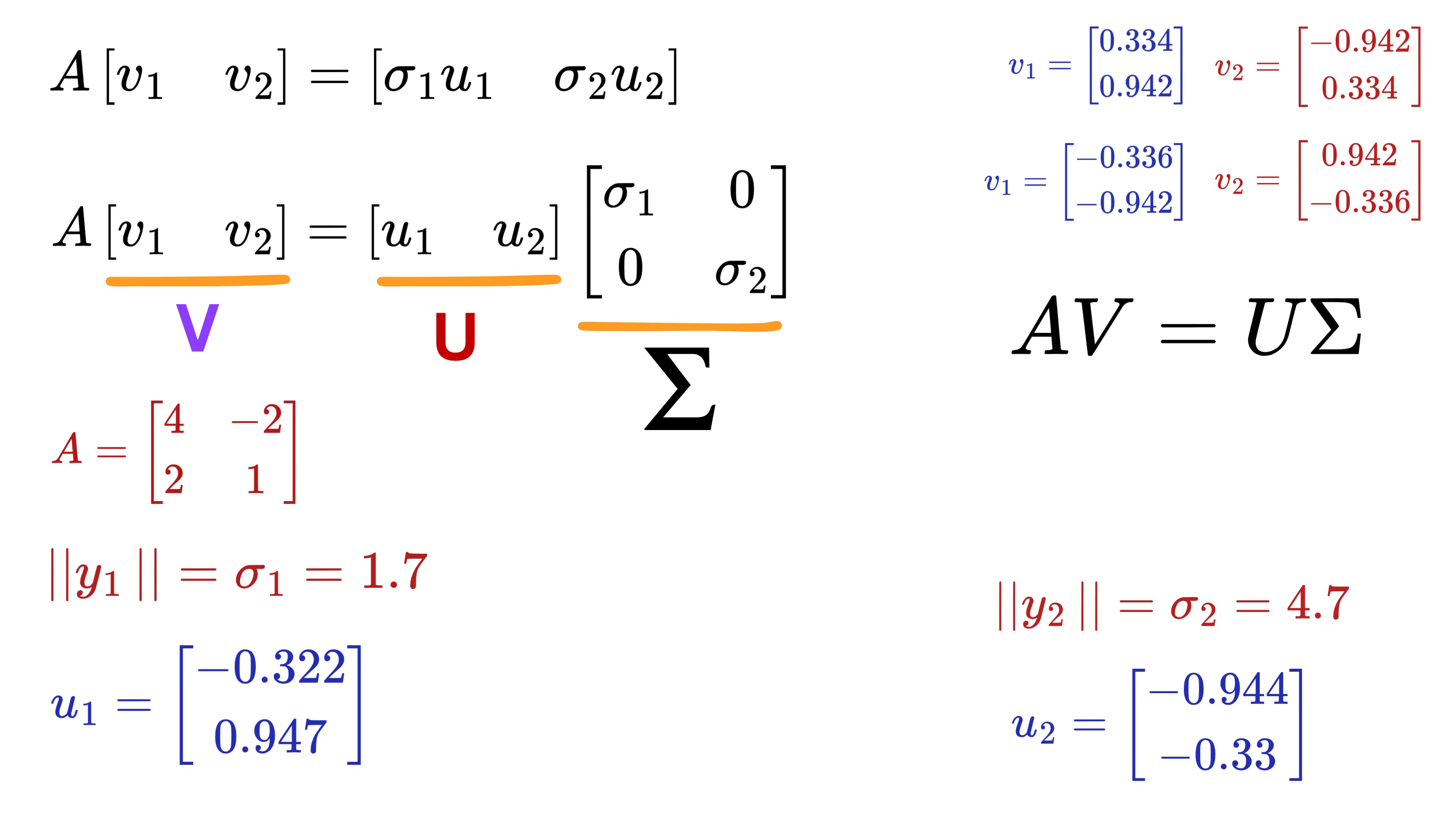Okay, now multiply both sides by the inverse of V to get this. Since V is an orthogonal matrix, which means all the vectors in it are orthogonal, so we know that for an orthogonal matrix, V inverse is the same as V transpose. Therefore, we get A as U times sigma times V transpose.